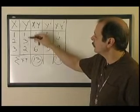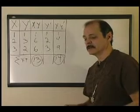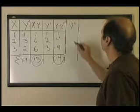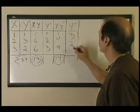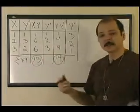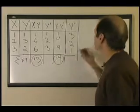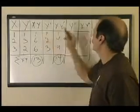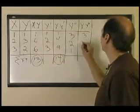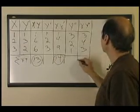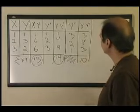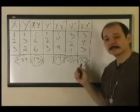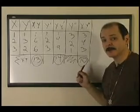That corresponds to the maximum positive correlation. Now, how would I arrange the Y scores to make it a perfect negative correlation? The scores would be rearranged so the smallest pairs with the highest and the highest with the smallest. The sum of products would be 1×3 = 3, 2×2 = 4, and 3×1 = 3, giving a total of 10.